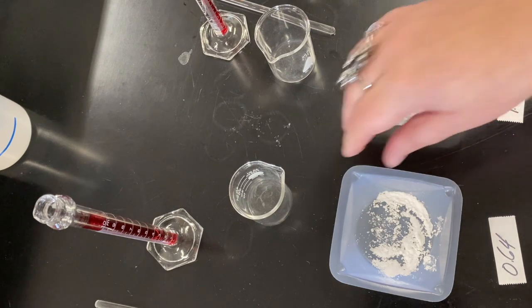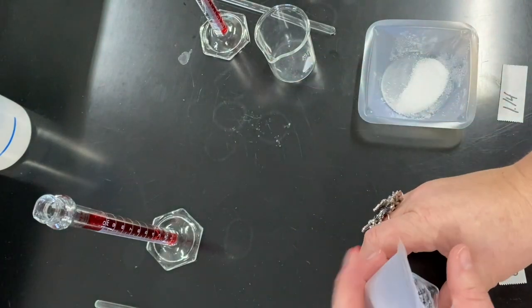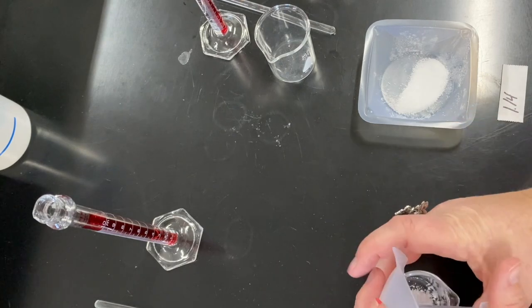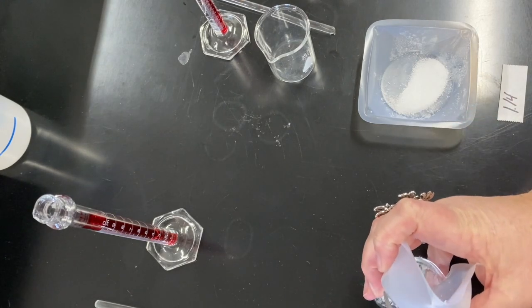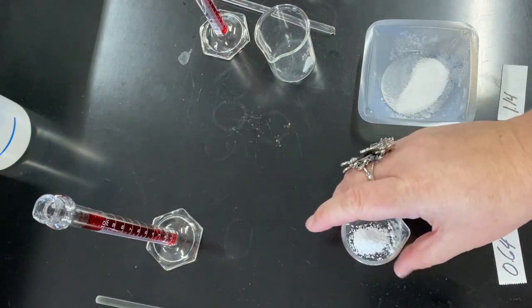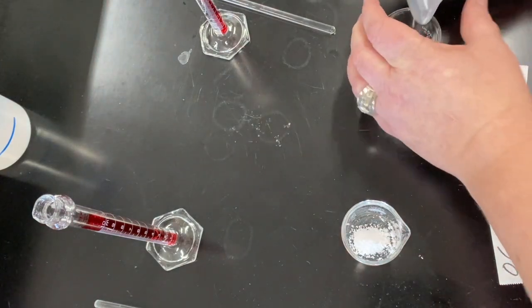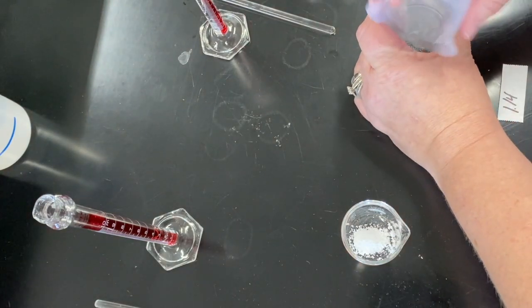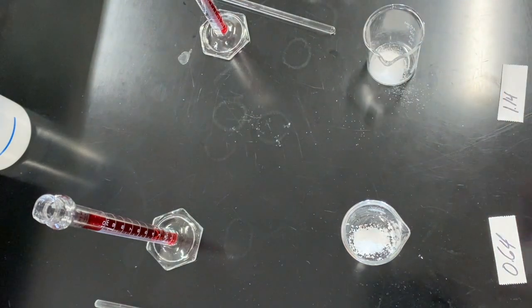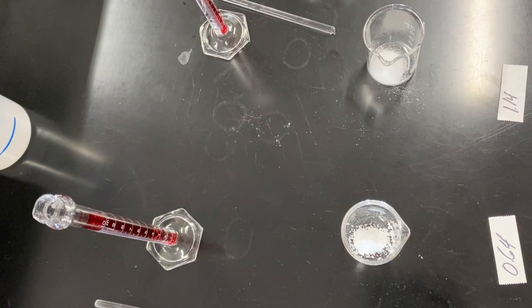So I'm going to add each of these to their own beaker. Try and get as much of that solid in there as possible. We don't want to lose anything. Transfer as much of that solid as we can. Don't want to lose anything. You can see that we've already lost a little bit. That will go to percent error.